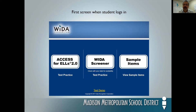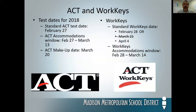I'm going to spend more time on Access details next month in our November meeting. Now let's take a look at the ACT and WorkKeys, some of the changes and information you need to know. Test dates for 2018: the standard time ACT is Tuesday, February 27th, followed by the accommodations window which runs from the 27th through March 13th. If a student misses the 27th and is taking the regular standard ACT, the make-up date is March 20th, which I believe is the Tuesday before spring break.